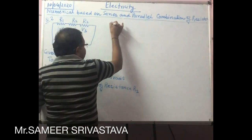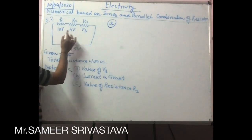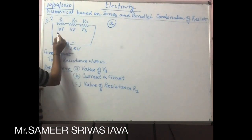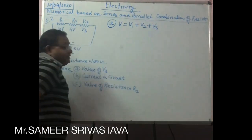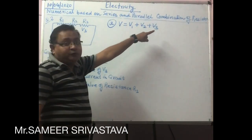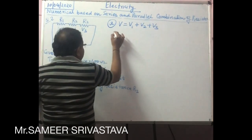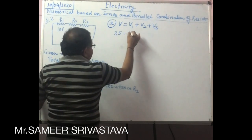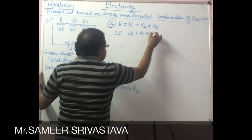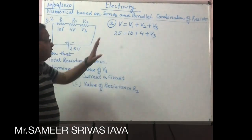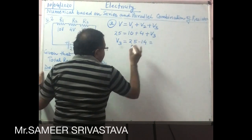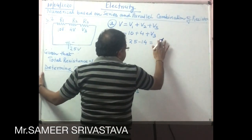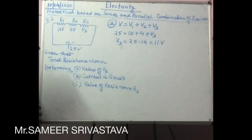Very simple problem. For section A, in the series circuit the voltage V is divided as V equal to V1 plus V2 plus V3. The total potential is 25V, V1 is 10V, V2 is 4V, but V3 is unknown. So V3 is equal to 25 minus 10 minus 4, which gives 11 volt. V3 is 11 volt.